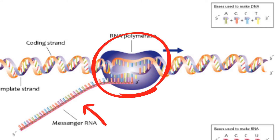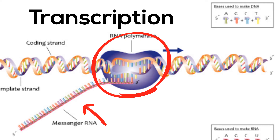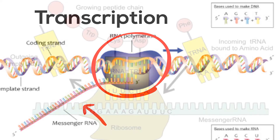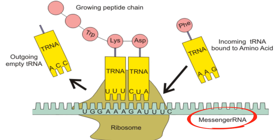This process of creating mRNA is called transcription. Transcription occurs in the nucleus. The next step is translation. Once created, the messenger RNA travels out of the nucleus and into the cytoplasm and then to a ribosome.